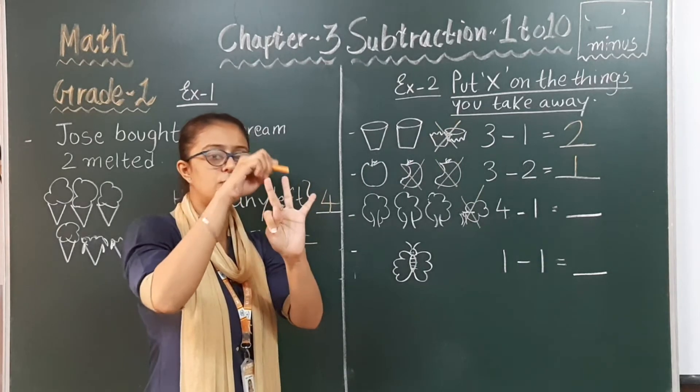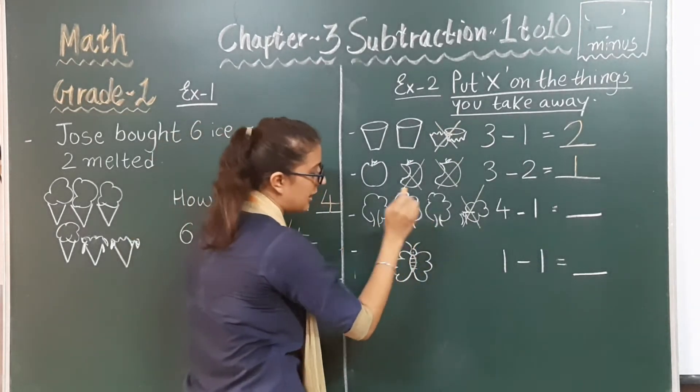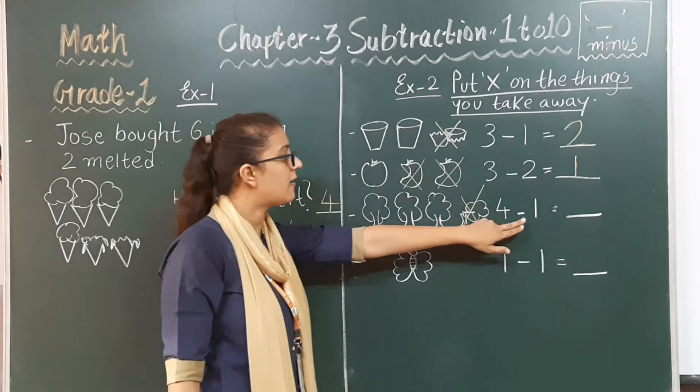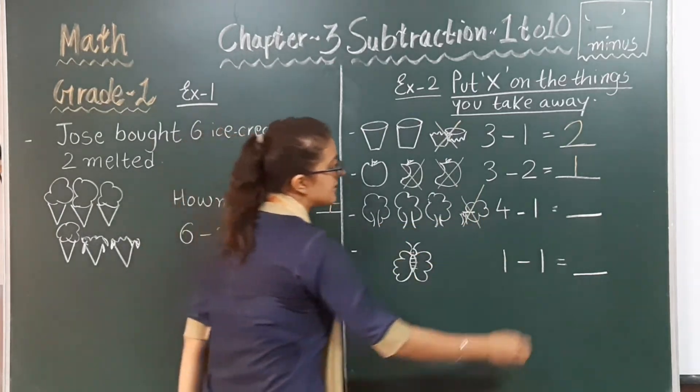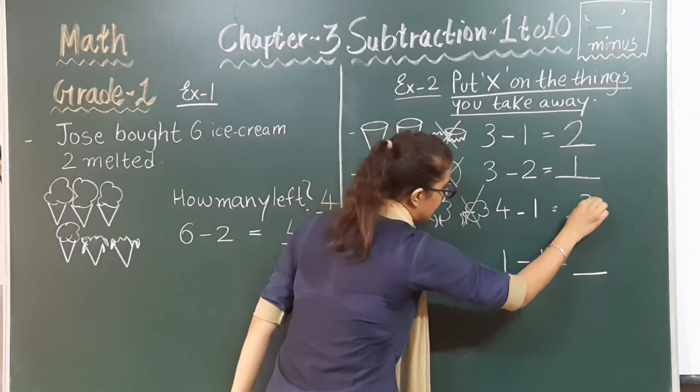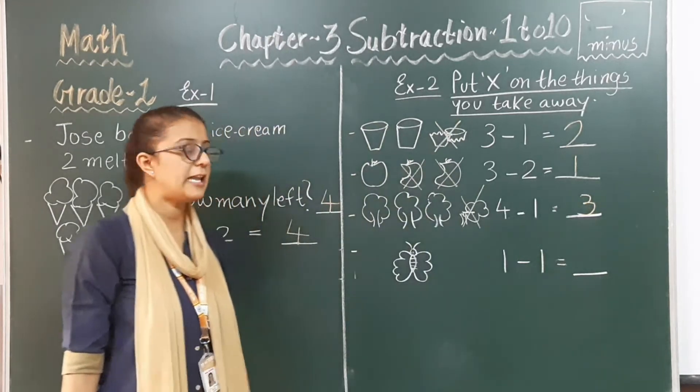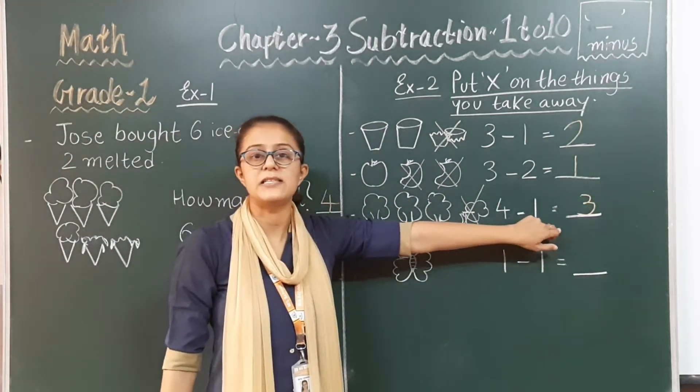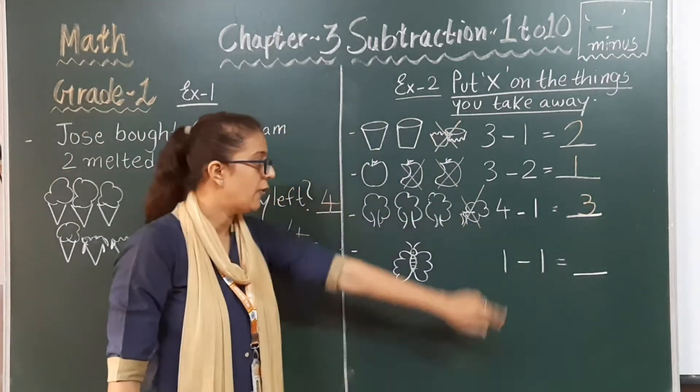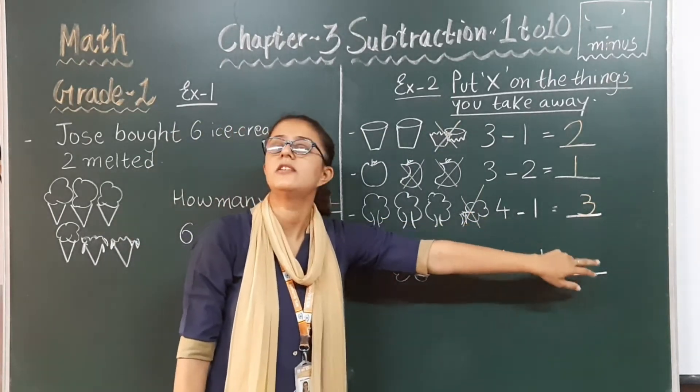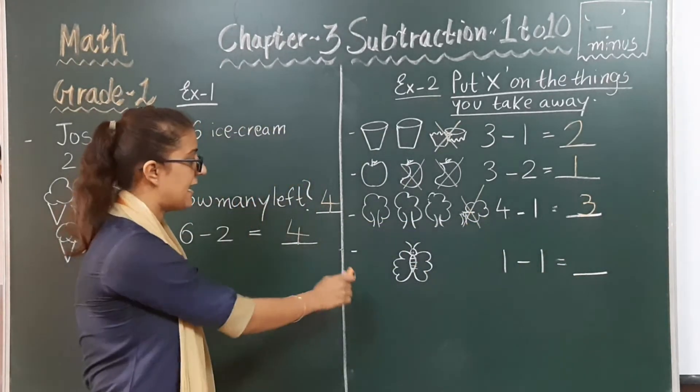One, two, three. So four take away one is three. Four minus one is equals to three. Next.